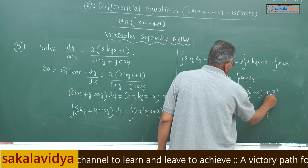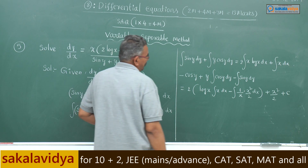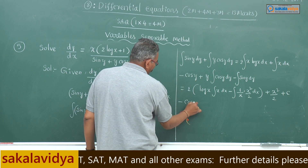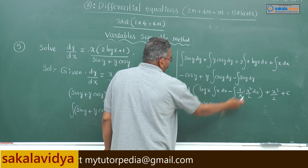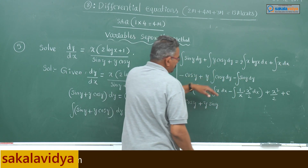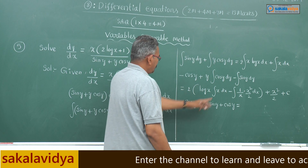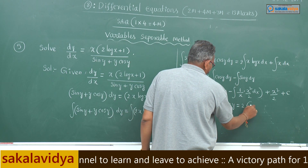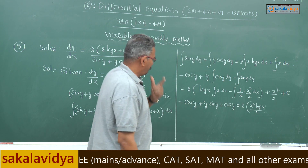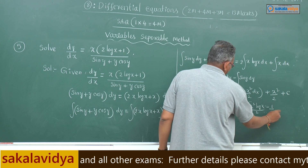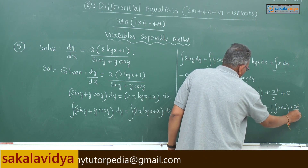Plus integral of x dx is x squared by 2, plus constant of integration. Now simplifying: minus cos y plus y sin y — integral of sin y is minus cos y, so minus of minus gives plus cos y. This equals x squared log x by 2 times 2, correct, and minus one-half integral x dx, plus x squared by 2, plus constant of integration.